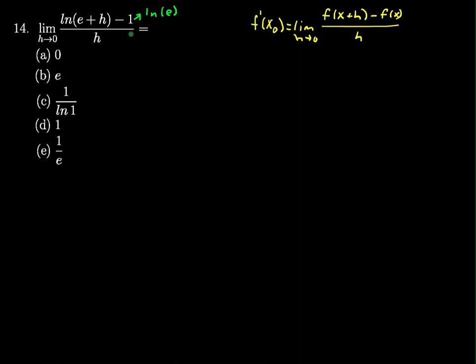So this limit equals the limit as h goes to zero of the natural log of e plus h, minus the natural log of e, all divided by h.